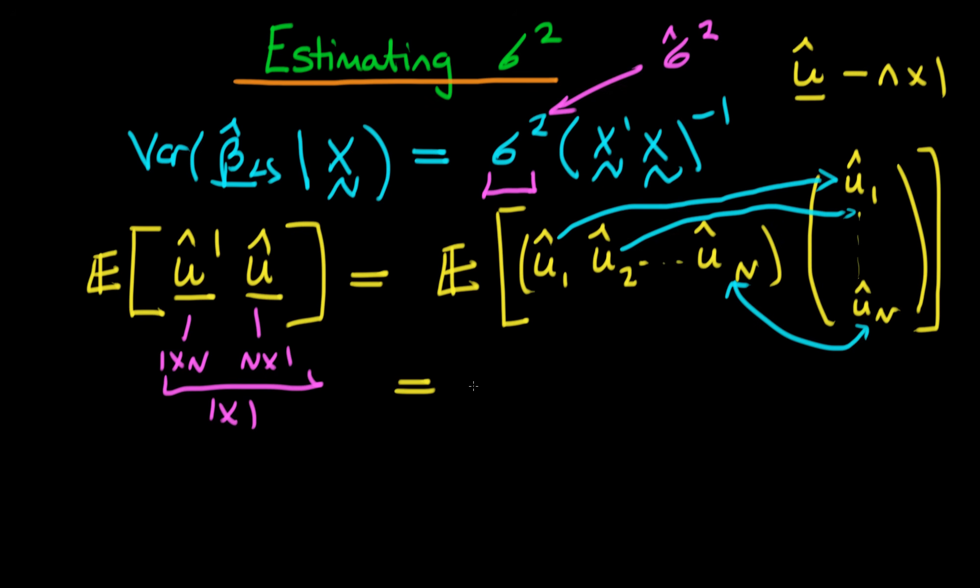So essentially what we're going to have here is we're going to have the expected value of the sum from i equals 1 to n of u hat i squared. And because there aren't going to be any sort of cross terms here because we're assuming that they're independent,